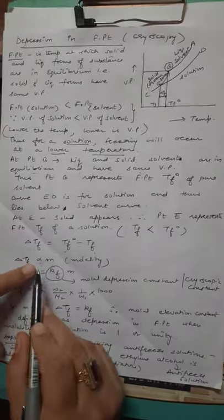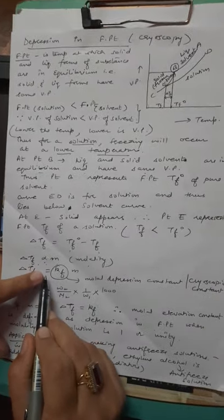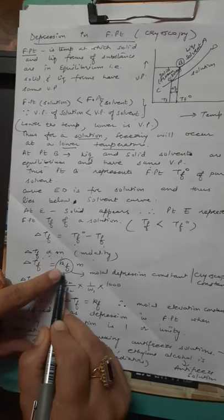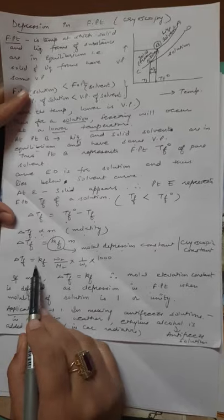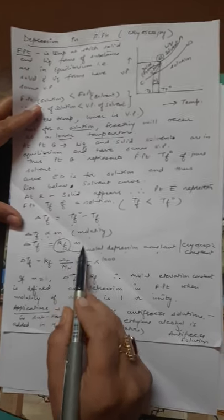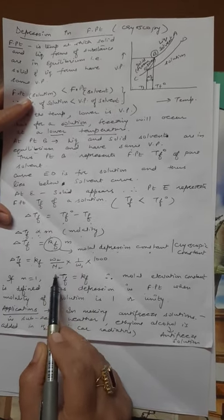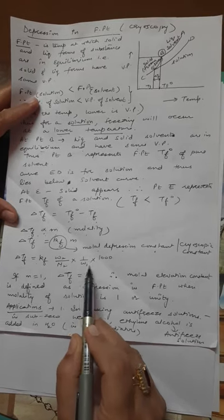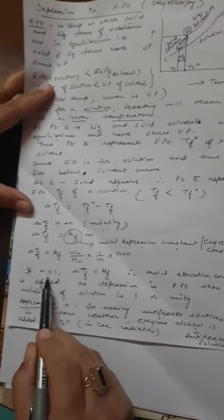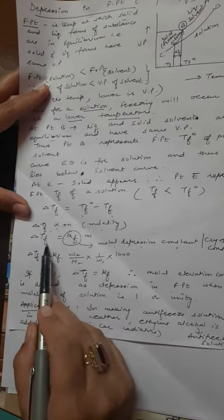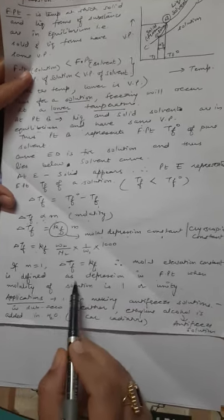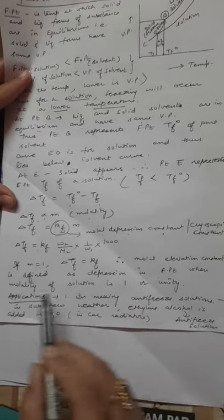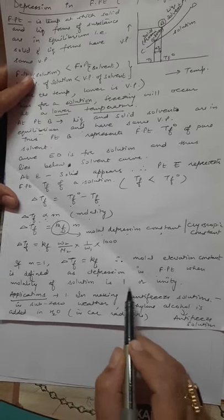If we remove this proportionality symbol, then we put here KF, which is molar depression constant or cryoscopic constant. ΔTF equals KF times molality. Molality can be written as W₂/M₂ × 1/W₁ × 1000. If molality equals 1, then ΔTF equals KF. So molar depression constant is defined as depression in freezing point when molality of solution is unity.